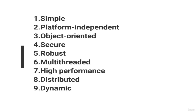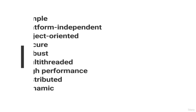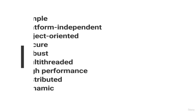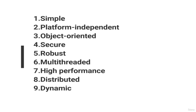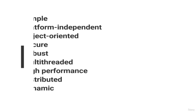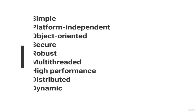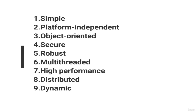We can use features like EJB (Enterprise Java Bean) and RMI (Remote Method Invocation) in Java to support distributed features. It is dynamic: Java is more dynamic compared to other programming languages like C and C++, because it can carry a large number of runtime information which we can use to verify runtime object access.